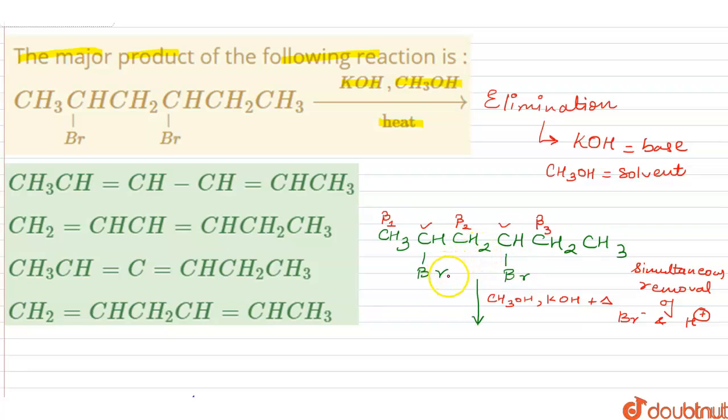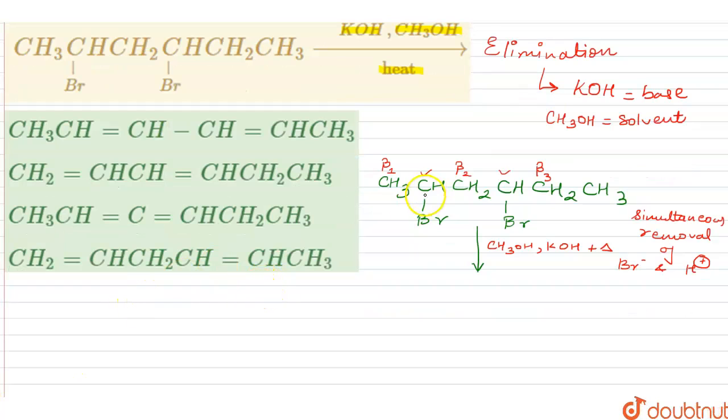Let us have a look. From the respective carbon bearing the Br groups, the respective beta hydrogens would be removed. The very first removal of two beta hydrogens from either of the beta hydrogens: let us catch hold of beta 1 and the other one would be beta 2.